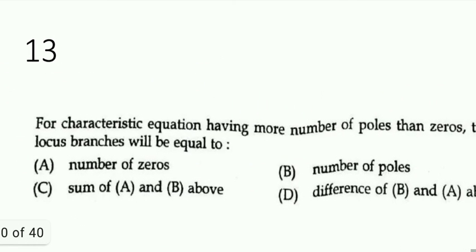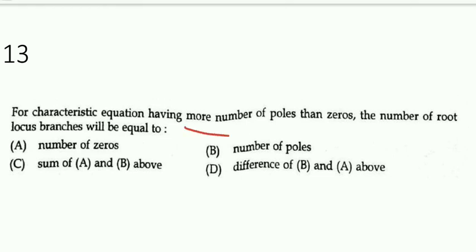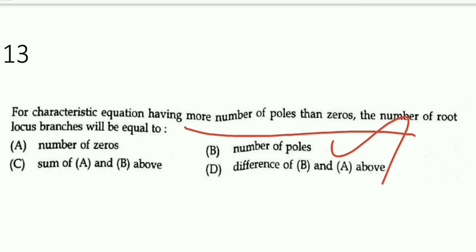Final question: for a characteristic equation having more poles than zeros, the number of root locus branches equals the number of poles. That is option B — a simple direct question. That concludes this session; please ask your doubts in the comment section. Thank you.